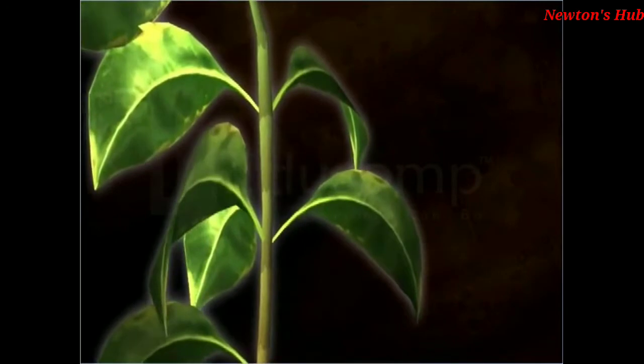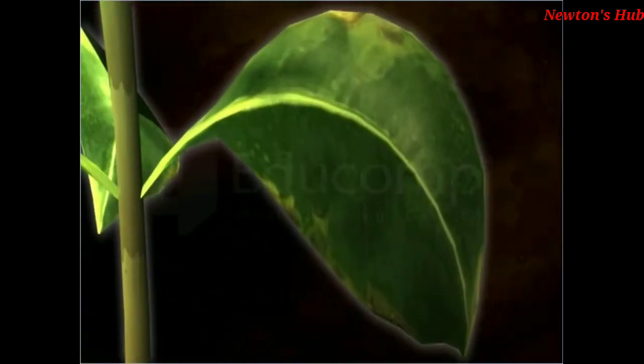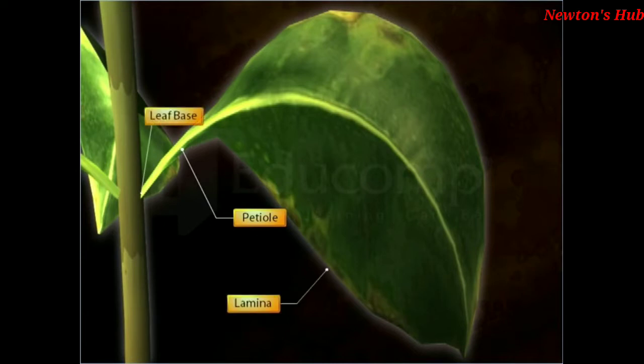All of you have seen leaves, but do you know the structure of the leaf? As a whole, a typical green leaf consists of the petiole or the leaf stalk, leaf blade or lamina, and the leaf base.